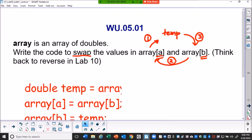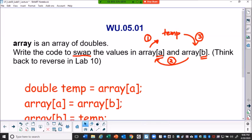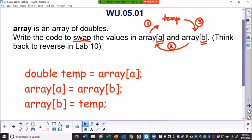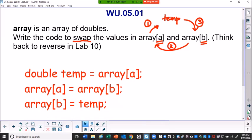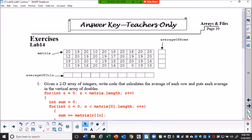So if we see the answer key here, you can see double temp has array A first. The return type of the temp is double because array is a double type. Then array A has array B. The order is very important. Then array B has temp. By using this swap, we can think about something else.